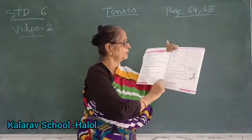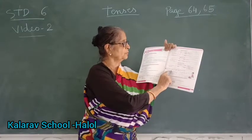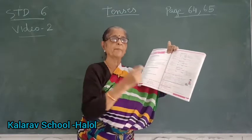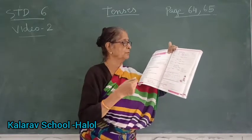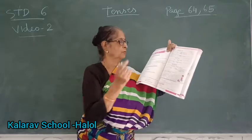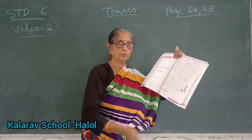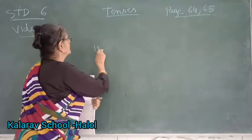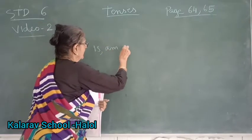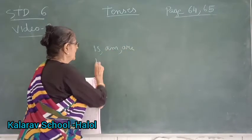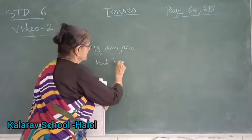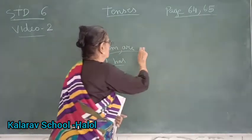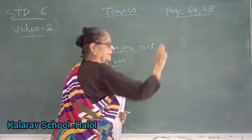Here the sentence is: 'The dress is new.' So the interrogative form is: 'Is the dress new?' From the interrogative you also have to change it into negative — 'The dress is not new.' With 'is', 'am', 'are', and 'has', these helping verbs, if you put 'not' after them it will become negative.